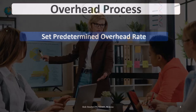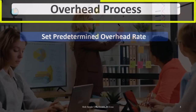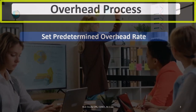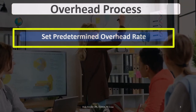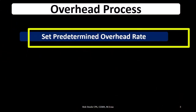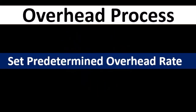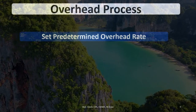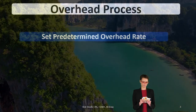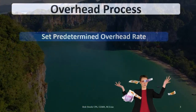When considering the accounting for overhead, there are a few steps to keep in mind. First, we set up a predetermined overhead rate, which will typically be based on prior performance or the last time period, accounting for any adjustments to get the current rate. We'll actually do the predetermined overhead rate last so we can see what kinds of things would be in overhead and how we would calculate it.